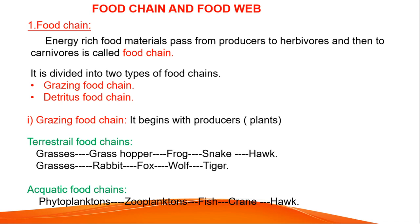Next, aquatic food chains. Phytoplankton → zooplankton → fish → crane → hawk. Phytoplankton is the producer. Zooplankton feeds on phytoplankton, fish depend on zooplankton, cranes depend on fish, and finally hawk. This is an aquatic food chain.